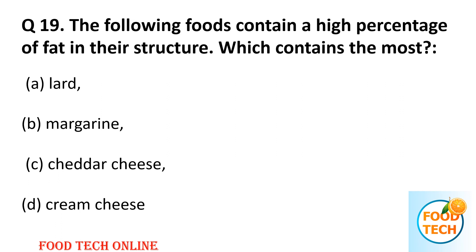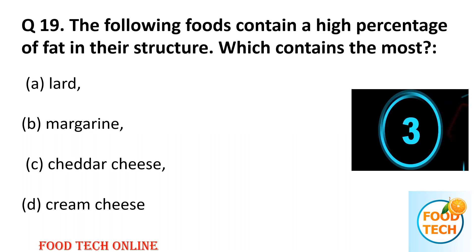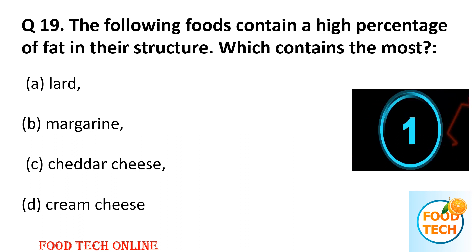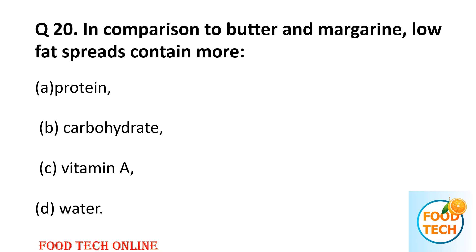Question 19: The following foods contain a high percentage of fat in their structure — which contains the most? A: lard, B: margarine, C: Cheddar cheese, D: cream cheese. Answer: A, lard.